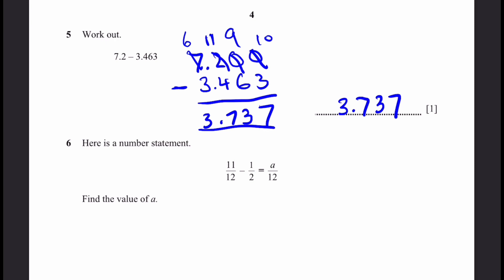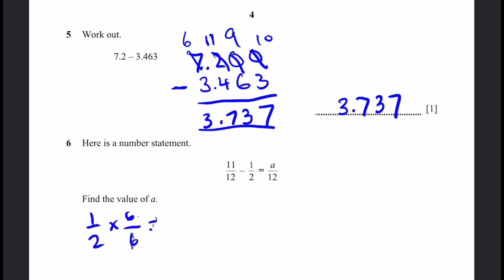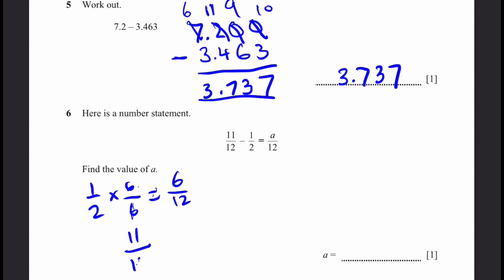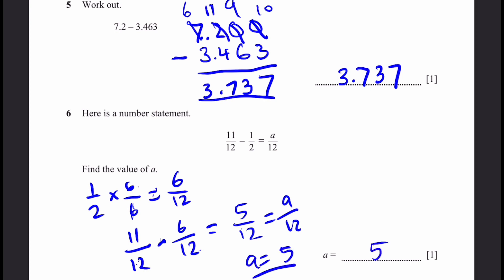Question 6. Here's a number statement: 11/12 minus 1/2 equals a/12. Find the value of a. First, convert 1/2 into twelfths by multiplying both sides by 6, giving 6/12. Then 11/12 minus 6/12 equals 5/12, so a equals 5.